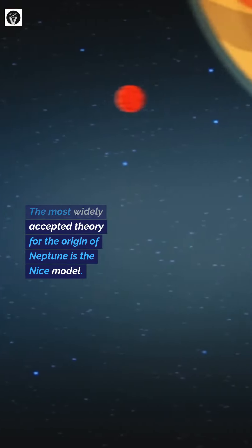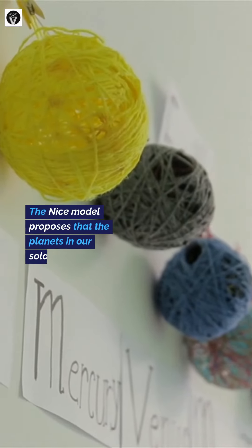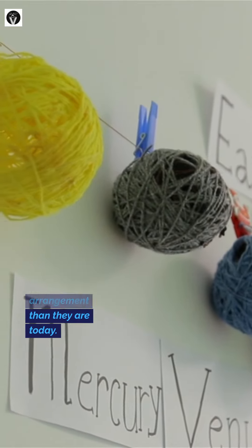The most widely accepted theory for the origin of Neptune is the NICE model. The NICE model proposes that the planets in our solar system formed in a much more compact arrangement than they are today.